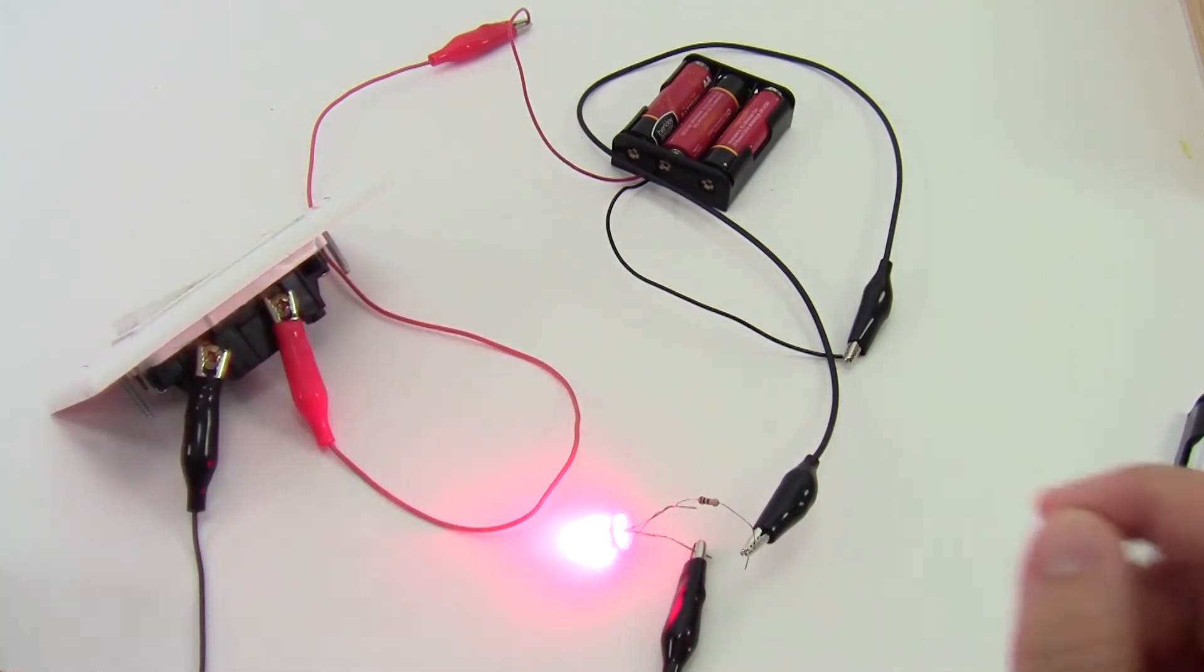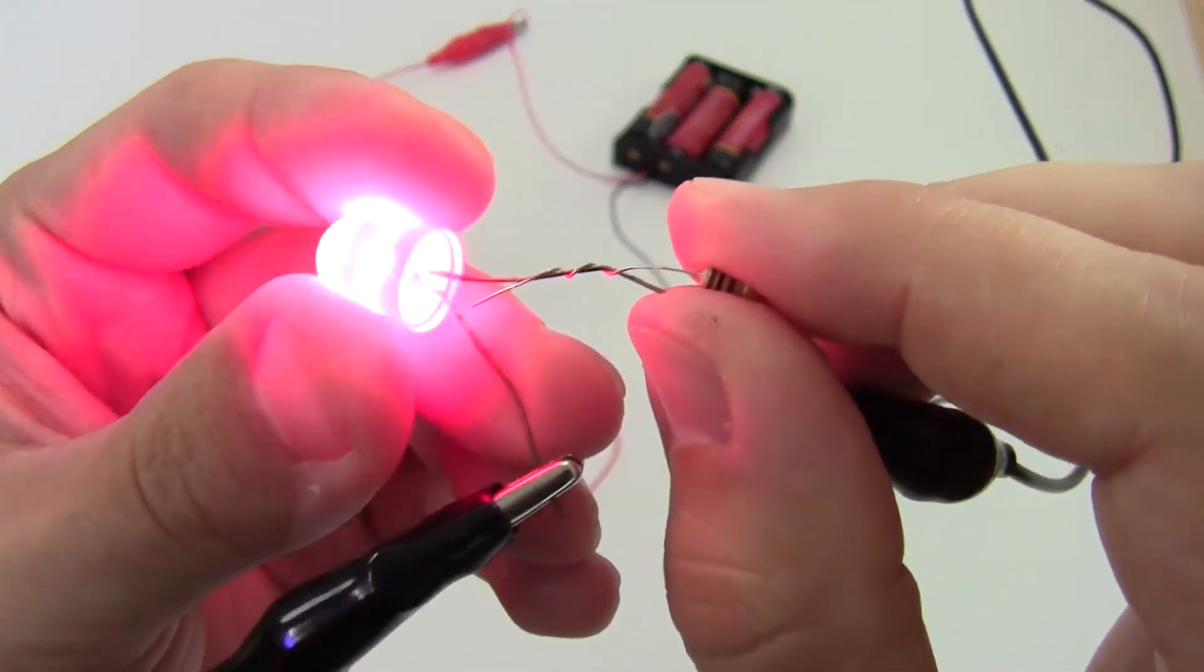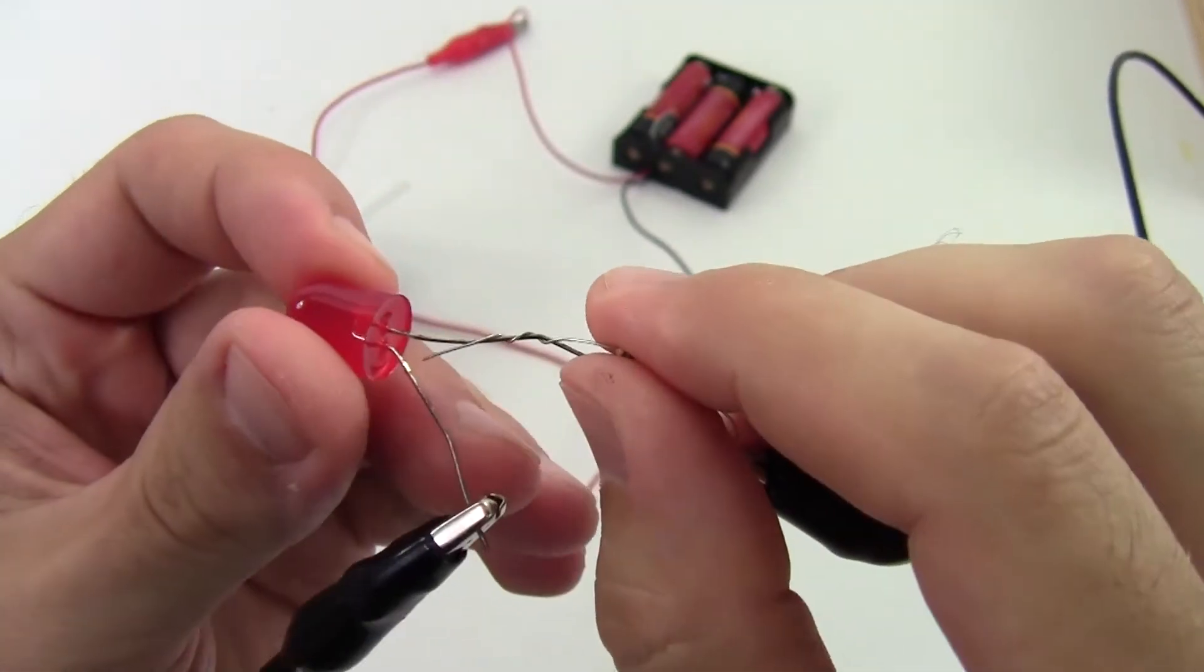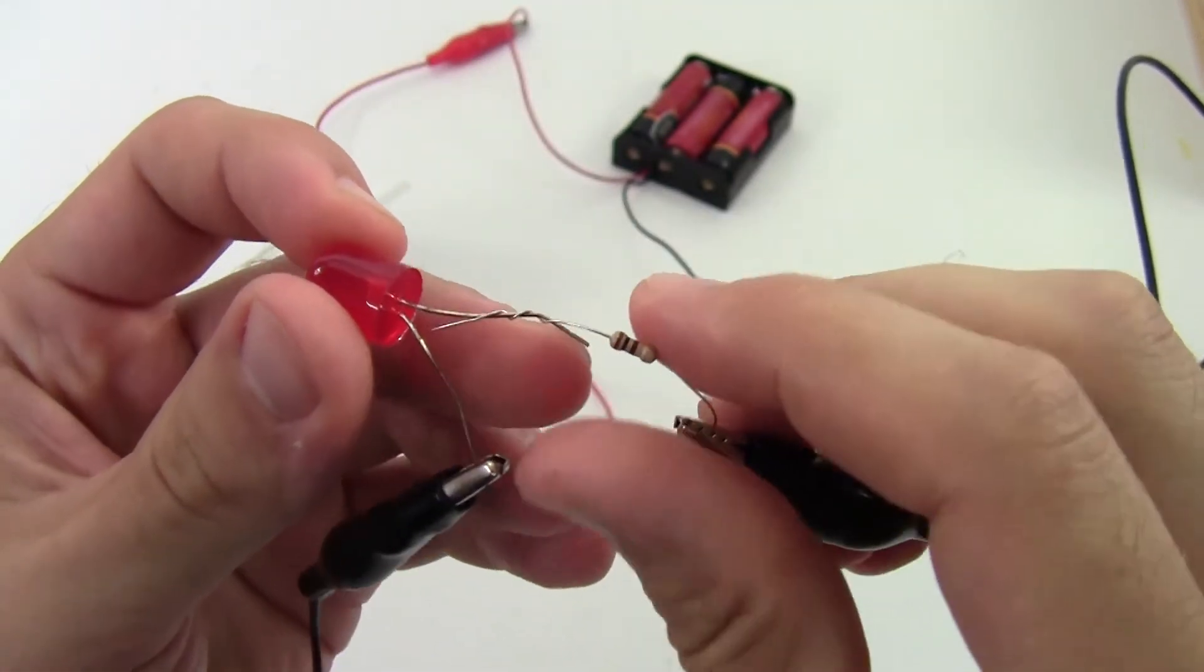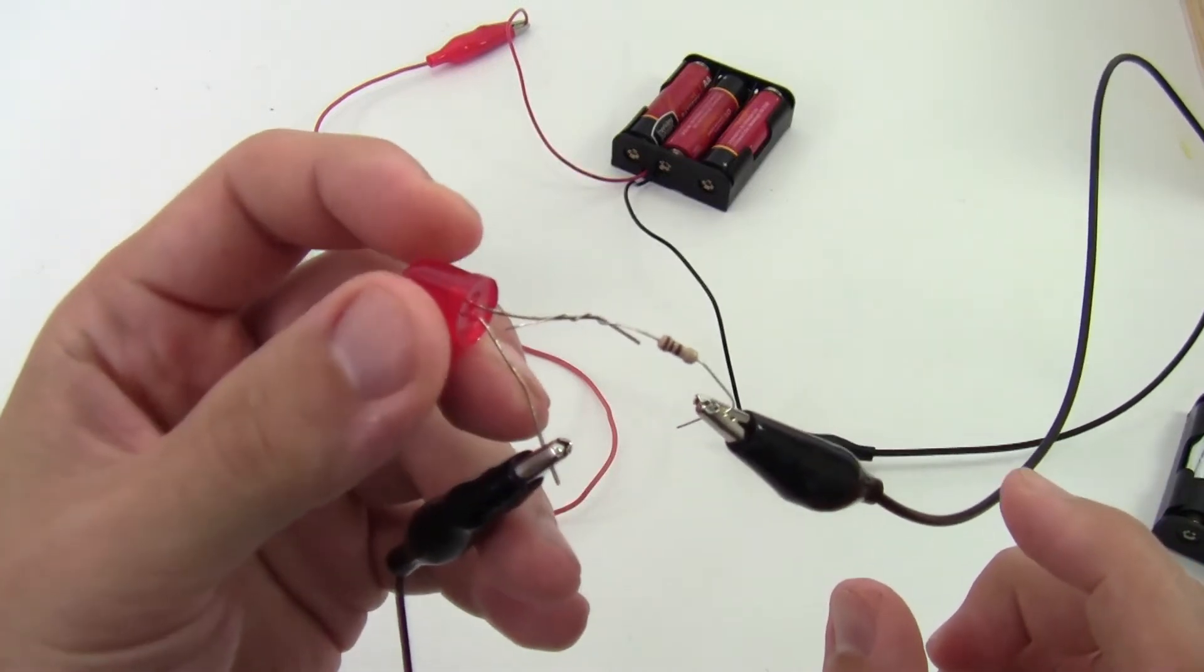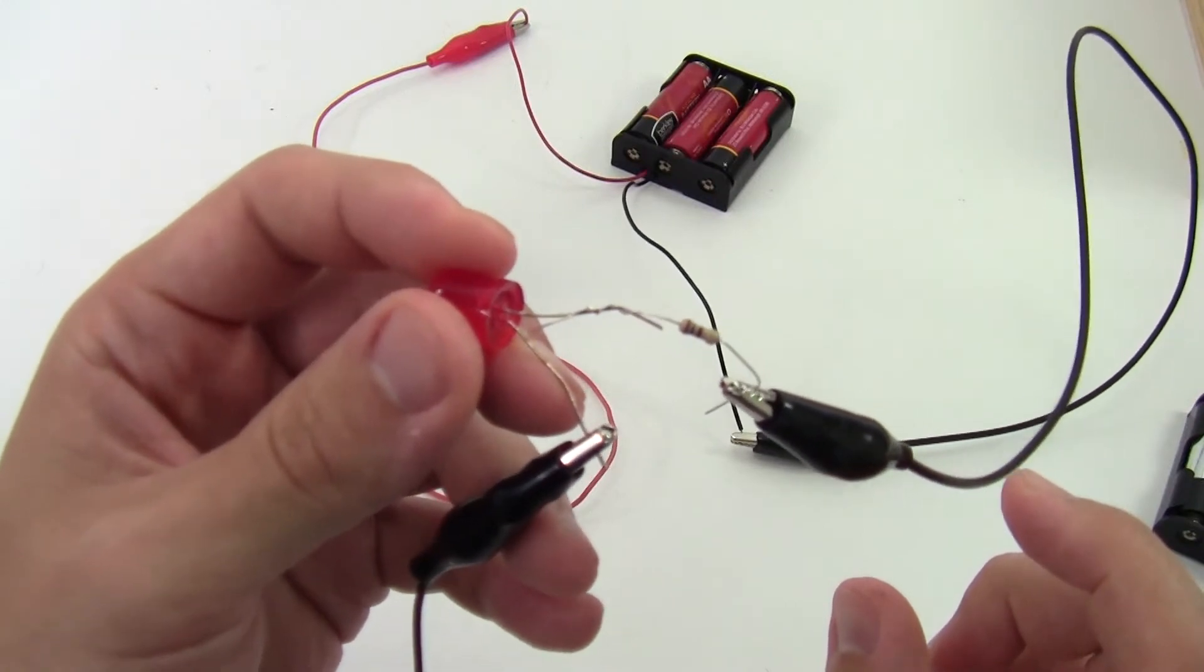And you can solder these connections together, or you can get away with just kind of twisting wires together like I've done here with the resistor and the LED, and then crimping them together with a pair of needle-nose pliers. But that's not going to hold up as well in the long run to abuse by small children. So soldering is definitely going to give you much sturdier connections that will hold up for a lot longer.